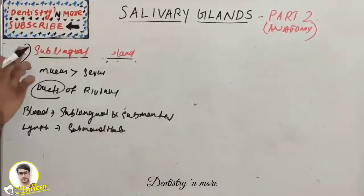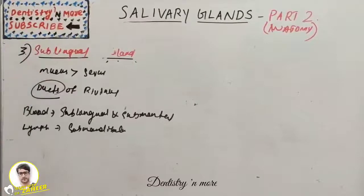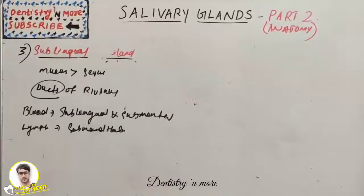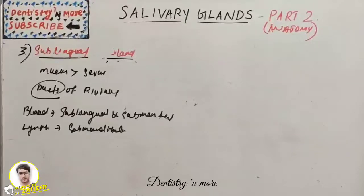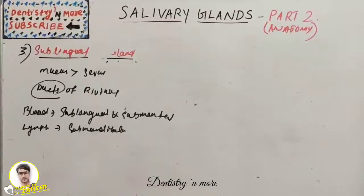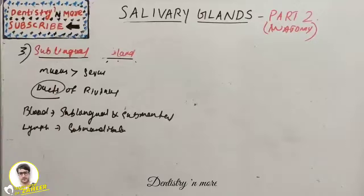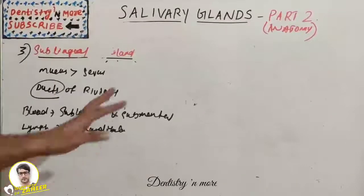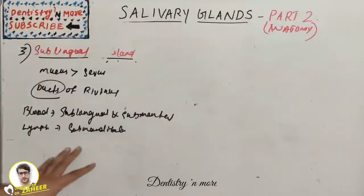That covers the sublingual gland. We have now finished the anatomy of the three major salivary glands: the parotid gland, submandibular gland, and sublingual gland. The next session, part three of the salivary gland series, will cover the various cells — serous cells and mucus cells — and the different types of ducts including intercalated ducts, striated ducts, and excretory ducts.